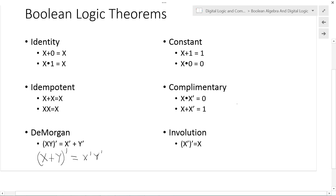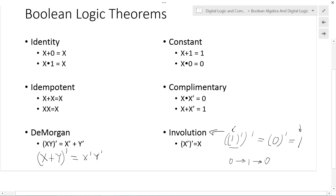Finally, we have the involution property — a double inversion. If we have 1 inverted, we get 0; inverting again gives 1. So 1 goes to 0, goes back to 1. If we start with 0: 0 goes to 1, goes back to 0. Therefore x double-prime equals x.